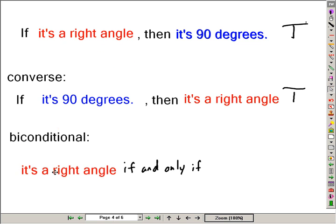So we can say this statement in the way of, it's a right angle, if and only if, it's 90 degrees. This usually occurs when the original statement is a definition.